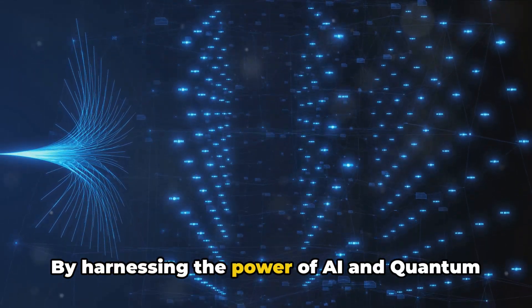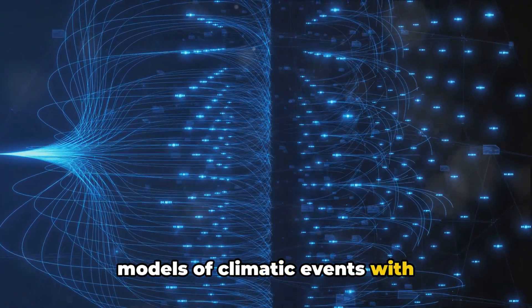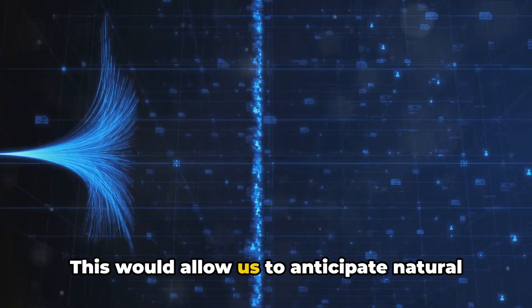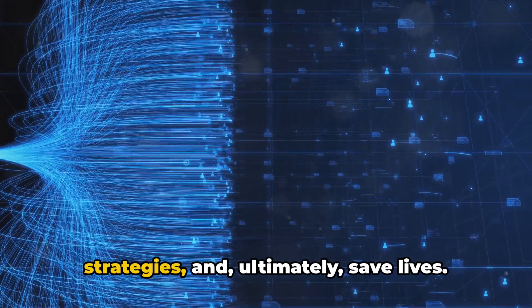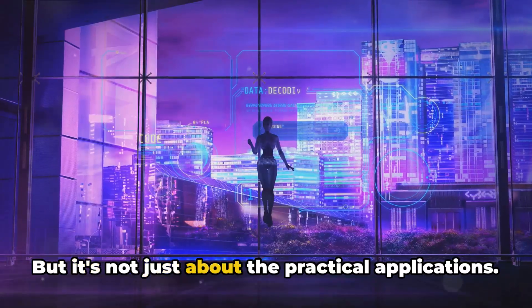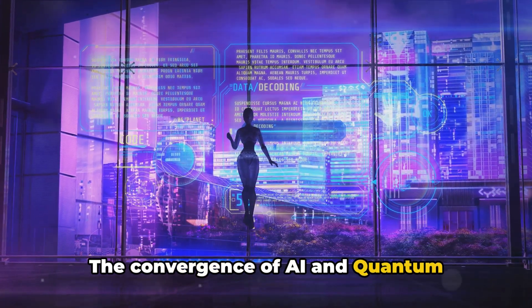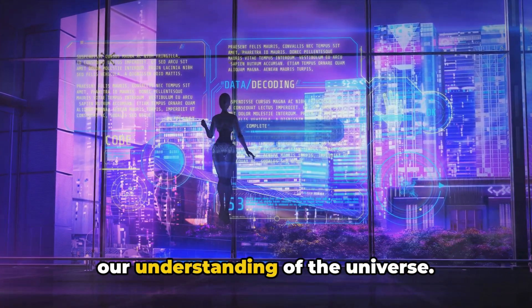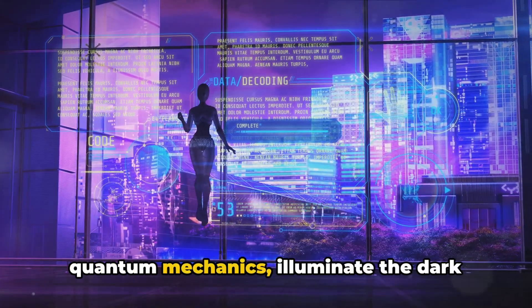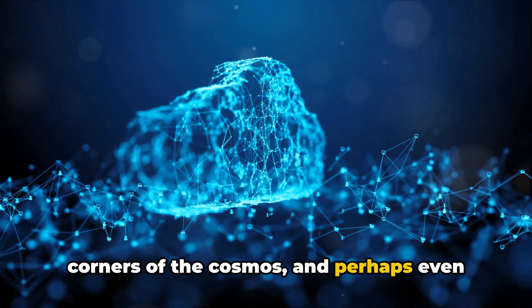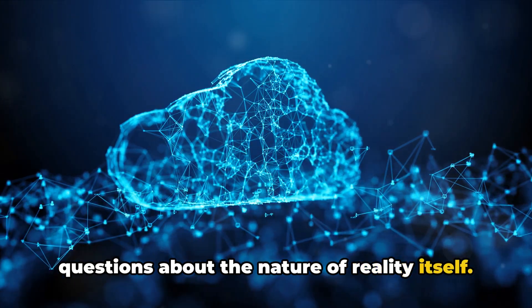And let's not forget about the environment. By harnessing the power of AI and quantum computing, we could create predictive models of climatic events with unparalleled accuracy. This would allow us to anticipate natural disasters, develop effective response strategies, and ultimately save lives. But it's not just about the practical applications. The convergence of AI and quantum computing has profound implications for our understanding of the universe. It could help us unravel the mysteries of quantum mechanics, illuminate the dark corners of the cosmos, and perhaps even answer some of the most fundamental questions about the nature of reality itself.